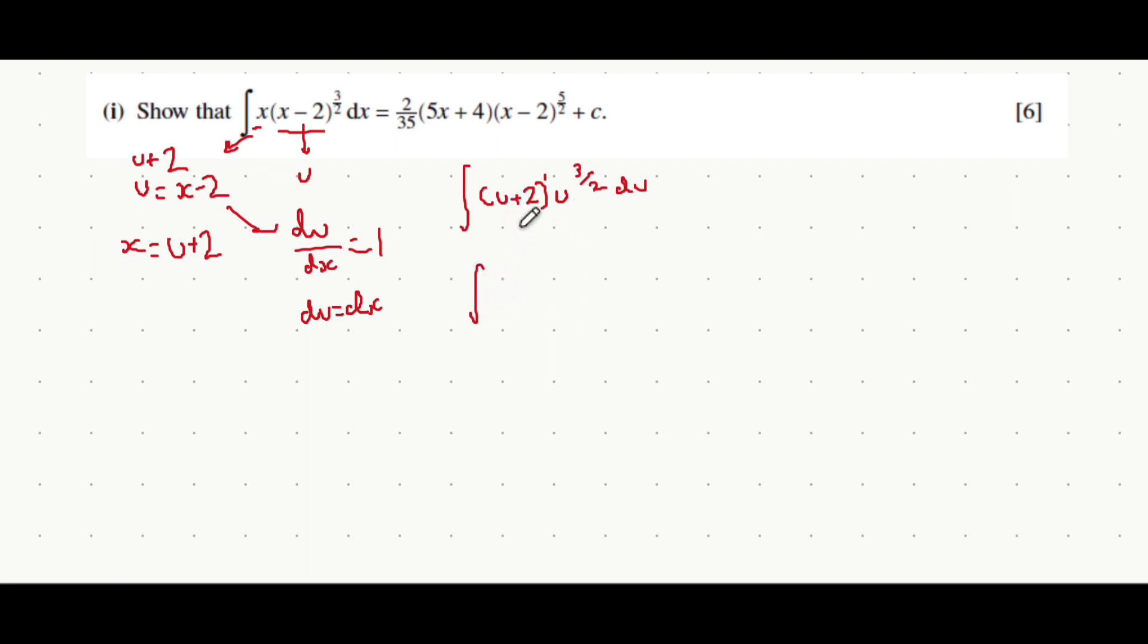Multiplying out the brackets now. u to the power of 1 multiplied by u to the 3 over 2, you add the powers together. 1 plus 3 over 2 is just 5 over 2, so we can say that's u to the power of 5 over 2, and then plus 2u to the power of 3 over 2, du.